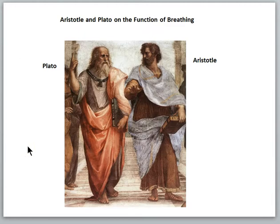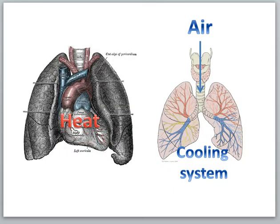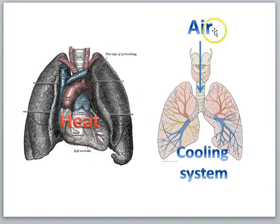By the 4th century BC, Plato and Aristotle hypothesized a more specific function or role for air. In their view, life required the production of a biological heat that made digestion, movement, and reproduction possible. Aristotle proposed that this heat was generated within the heart, and that unless the heart was cooled by air from the lungs, the biological flame would consume itself and go out.